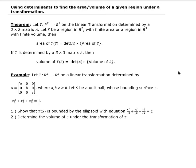Here's an example — it's a volume problem — where we're letting T be a linear transformation determined by matrix A, where A, B, and C are greater than or equal to zero. We're going to let S be a unit ball whose bounding surface is given by the equation shown. First, we want to show that T(S) is bounded by an ellipsoid with a given equation. Then secondly, we want to determine the volume of S under the transformation T.